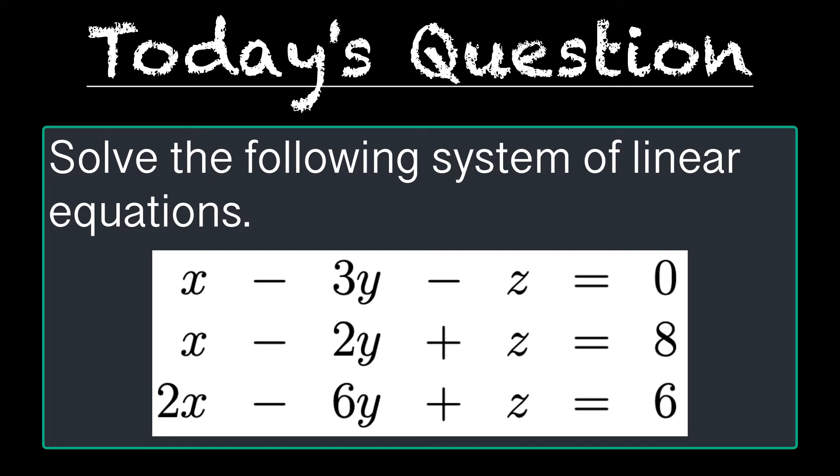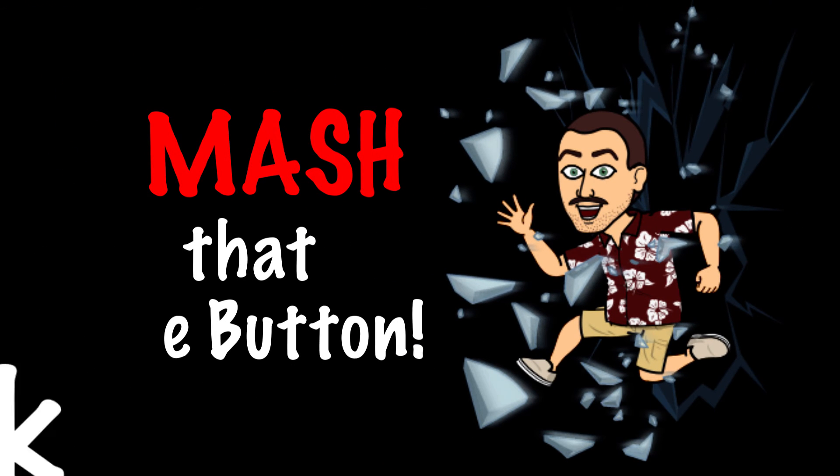The question we're working on today is, solve the following system of linear equations. And the equations are: x minus 3y minus z equals 0, x minus 2y plus z equals 8, and 2x minus 6y plus z equals 6. Smash that like button and let's get started.